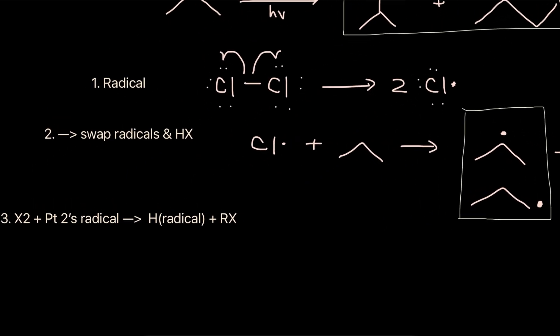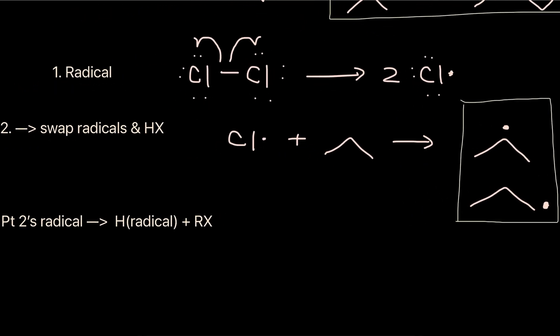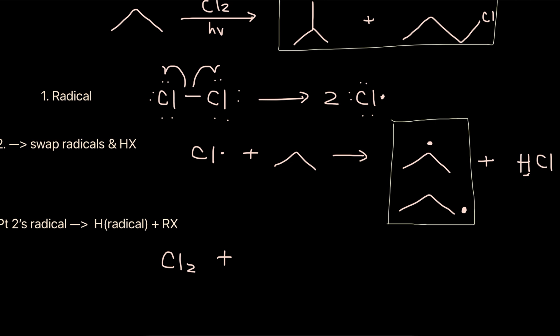And the last part is kind of random, but you just have to memorize it. So it's going to be the original diatomic halogen (Cl₂), plus the radical you obtained in part two of the problem. These will react.